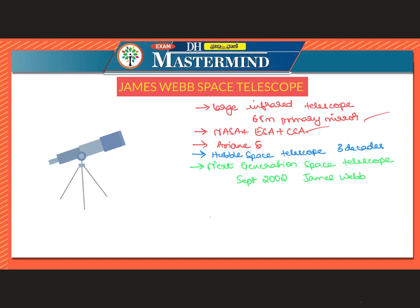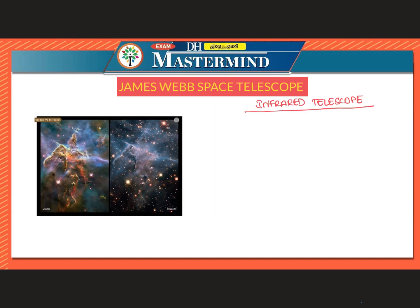Now let us look at the important features of James Webb Space Telescope and how it is an improved version of Hubble. JWST is a large infrared telescope. The Hubble Space Telescope used to observe celestial bodies in the ultraviolet and visible range, whereas James Webb Space Telescope views distant objects through infrared wavelengths.